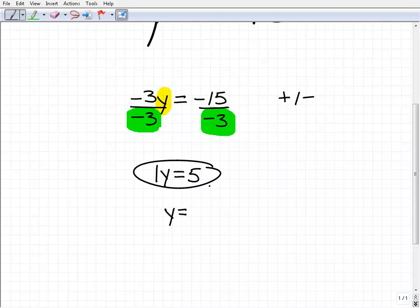Okay, so our solution is y equals 5. So you don't have to write the 1 in front of this y, but I want you to understand that that's what that means. y equals 5 means 1y equals 5, and that is your solution.